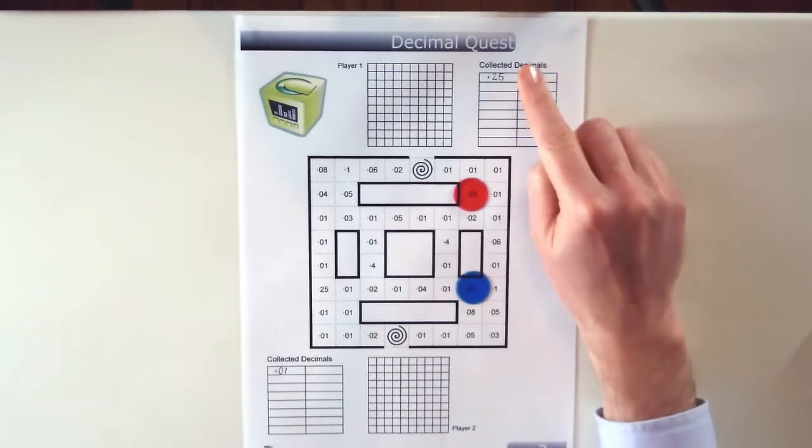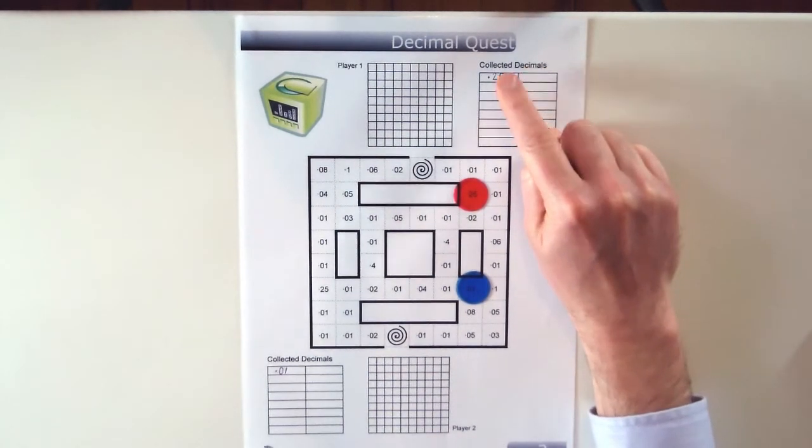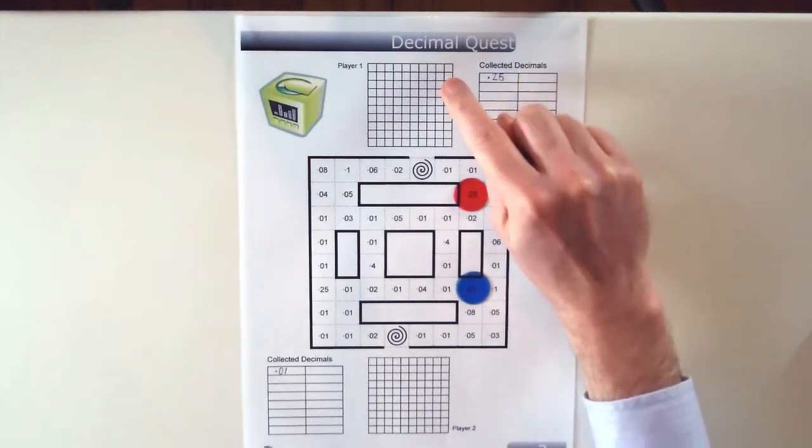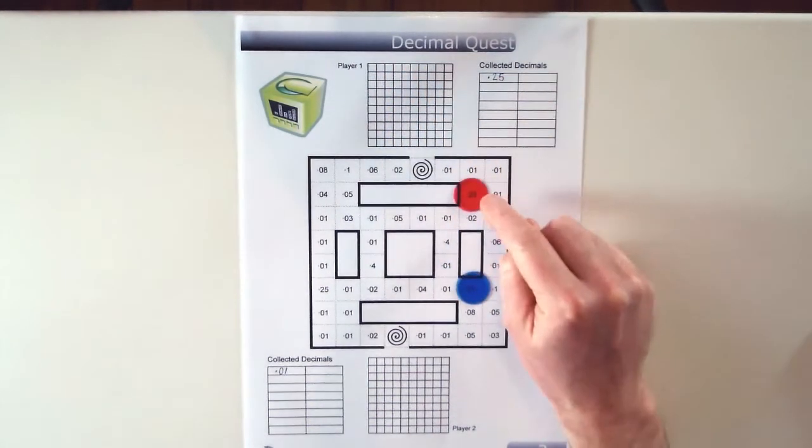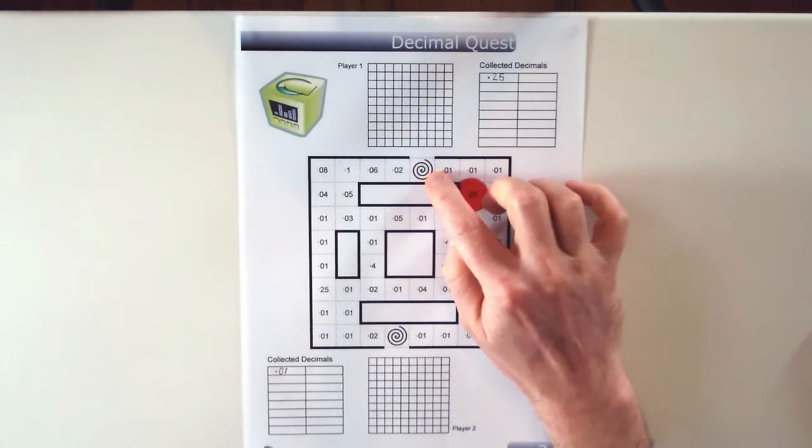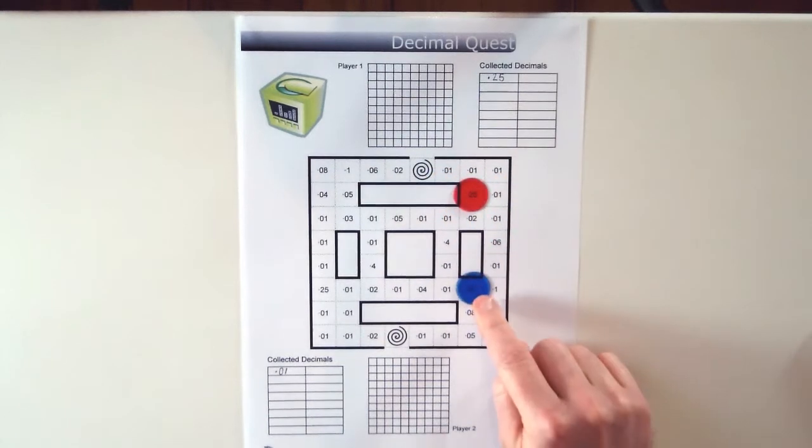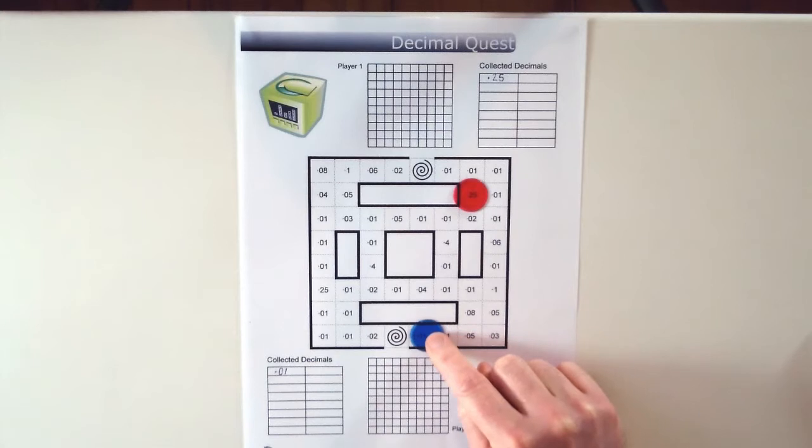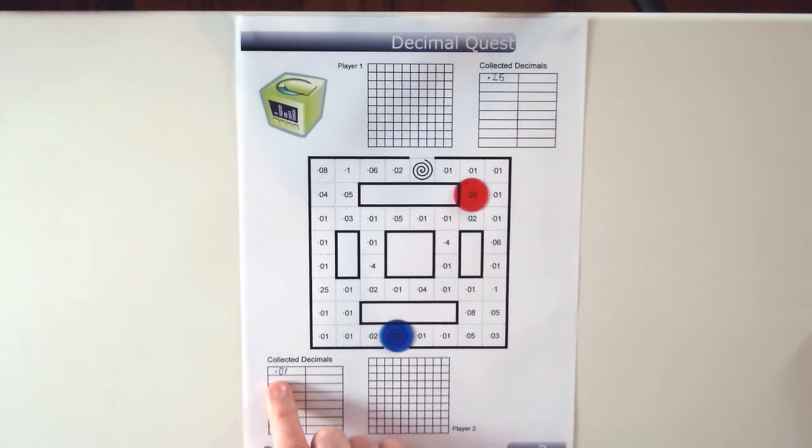Now in order for a player to move the decimal from their collected decimals area into their actual grid, they need to move back onto their little warp gate here. So blue is going to move back now, 1, 2, 3, 4, 5 and put their 0.01 into the grid.